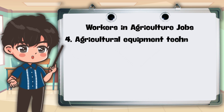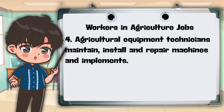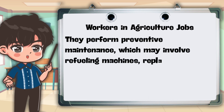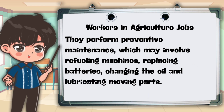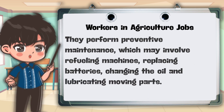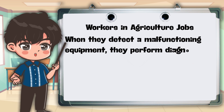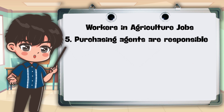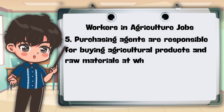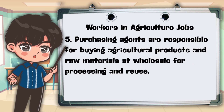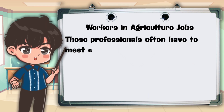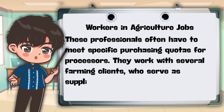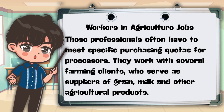4. Agricultural equipment technicians maintain, install, and repair machines and implements. They perform preventive maintenance, which may involve refueling machines, replacing batteries, changing the oil, and lubricating moving parts. When they detect a malfunctioning equipment, they perform diagnostic tests and conduct necessary repairs. 5. Purchasing agents are responsible for buying agricultural products and raw materials at wholesale for processing and reuse. These professionals often have to meet specific purchasing quotas for processors. They work with several farming clients who serve as suppliers of grain, milk, and other agricultural products.